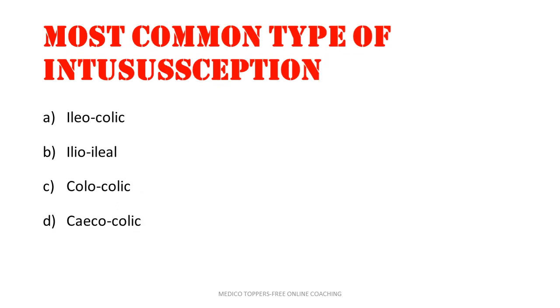One type of intussusception: ileocolic, ileoileal, colocolic, and cecocolic. The answer is ileocolic. This is one of the most important questions.